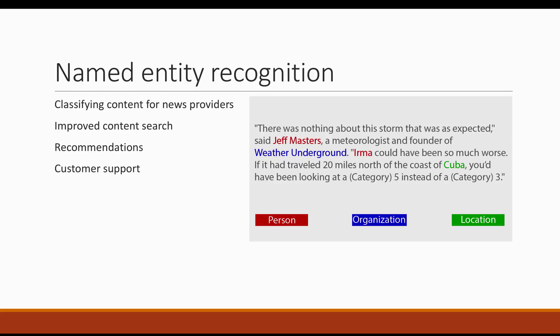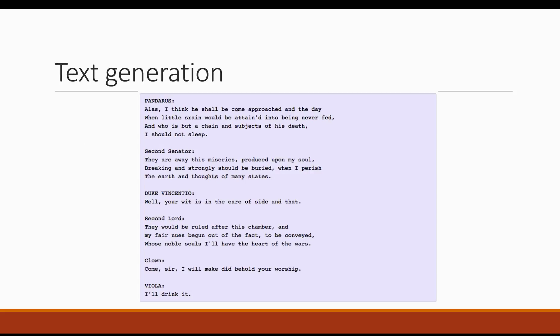Named entity recognition can also be used in recommendations — similar to classification, it can extract useful information to recommend similar news articles based on what someone likes. It can also be used in customer support. For example, if you're a retailer with multiple branches across the world, you want your system to understand what someone is referring to, whether they're referring to a particular product or a particular shop in a location.